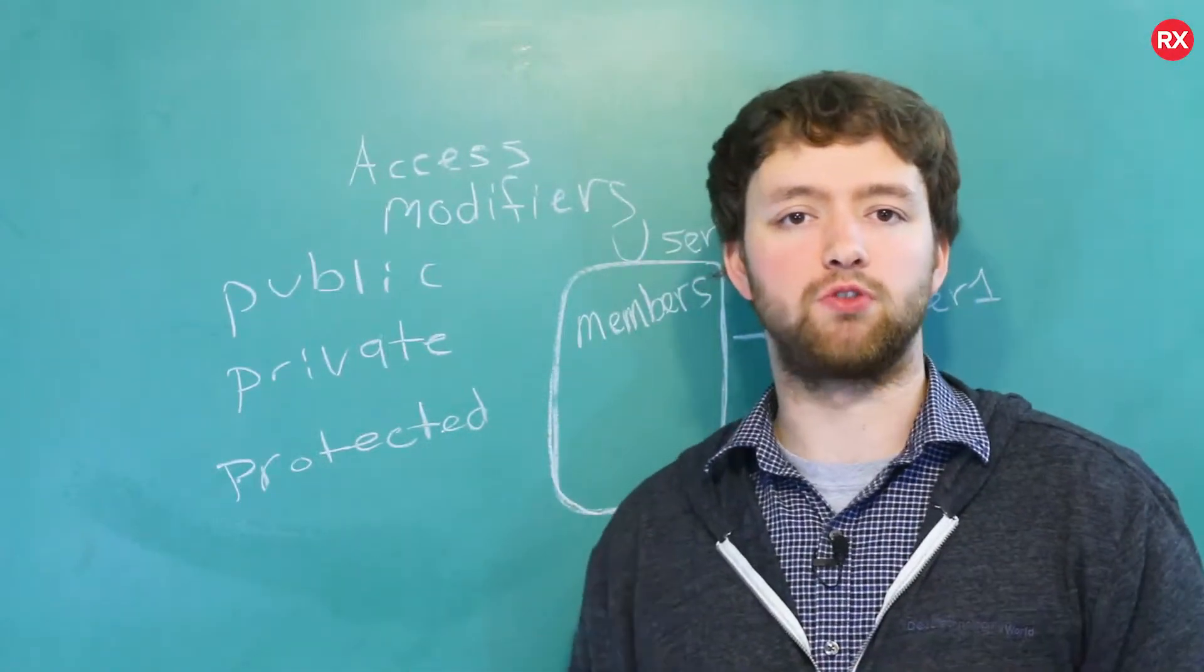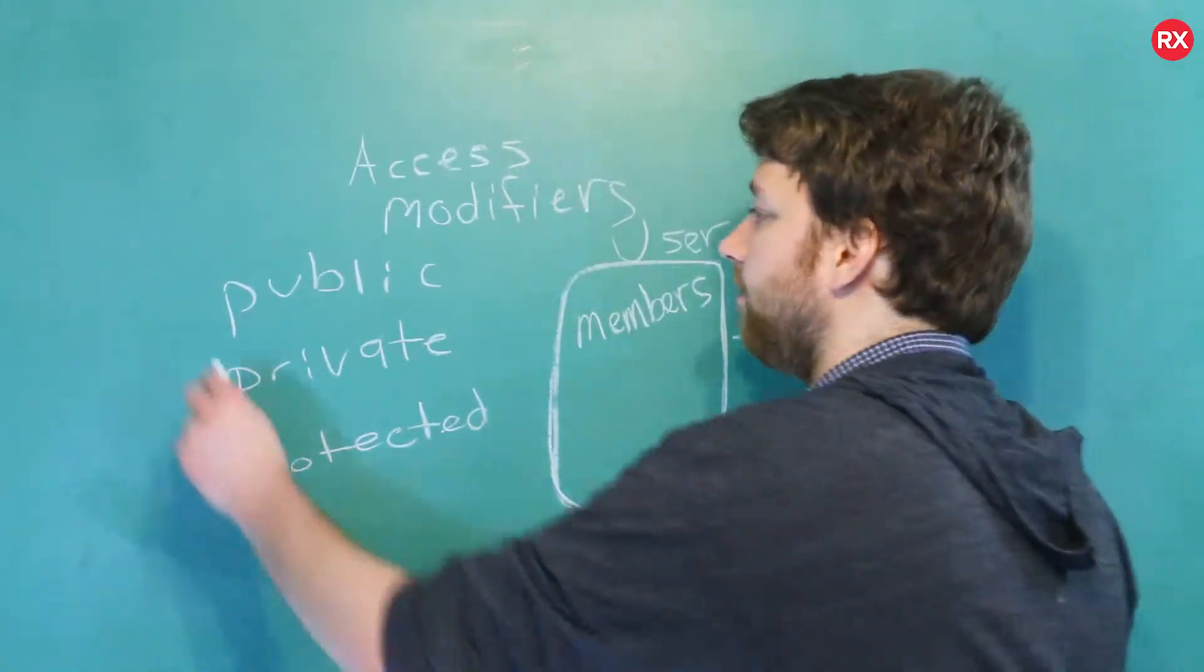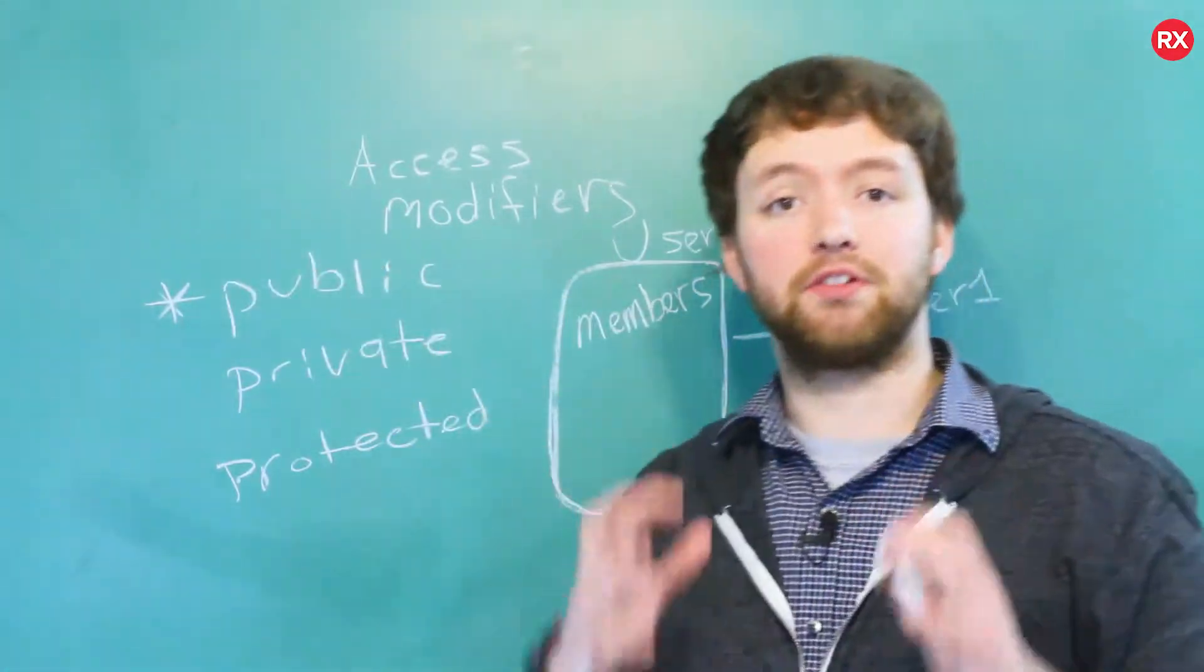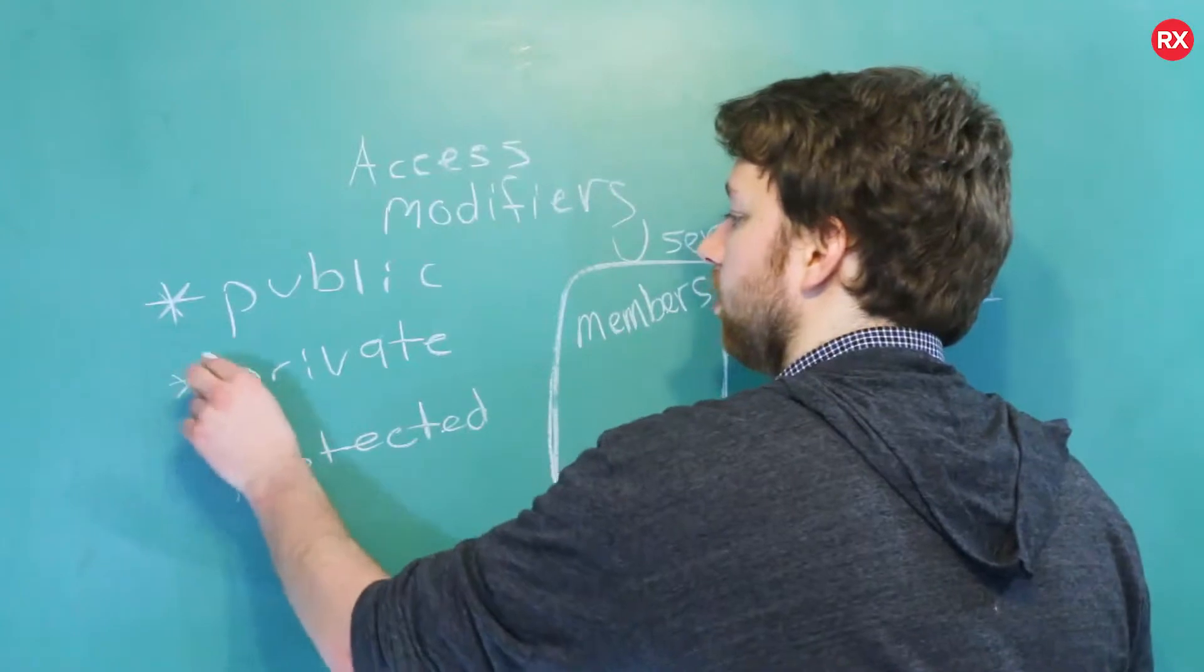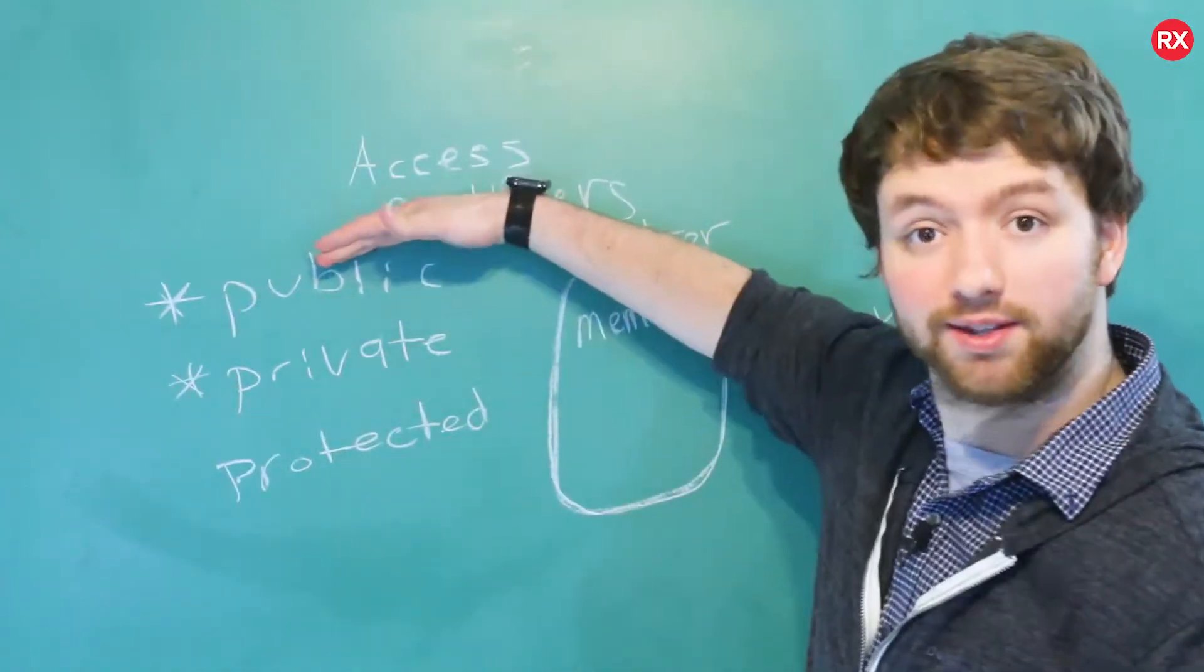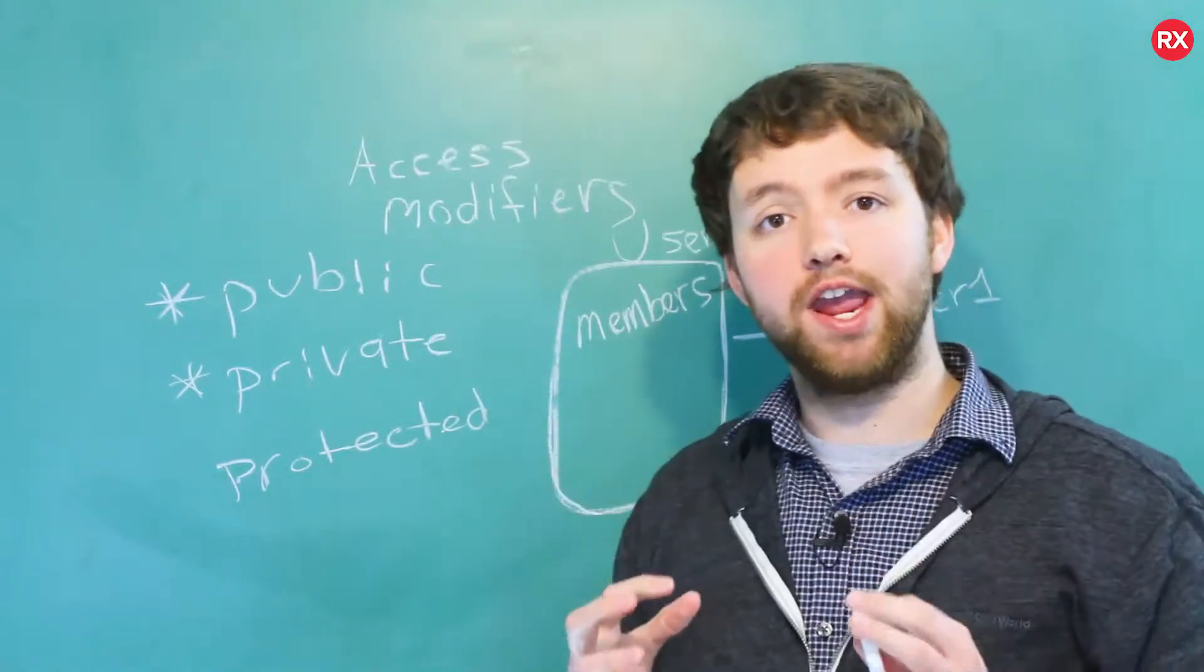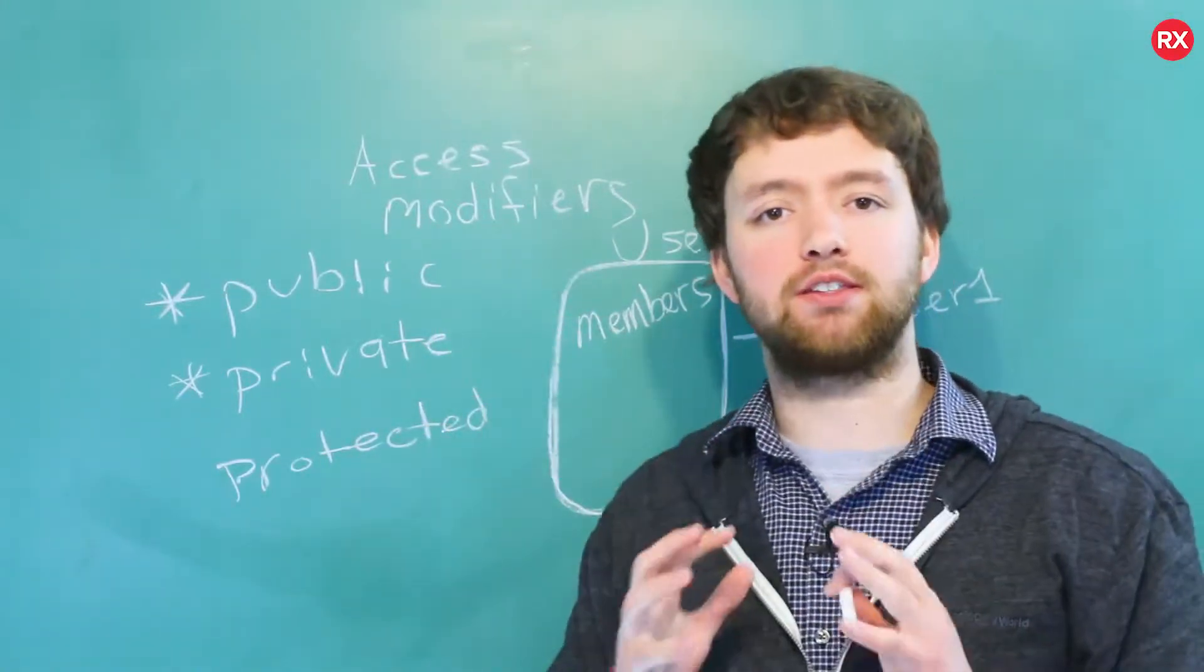Now the only difference when it comes to structs and classes is that structs, the members are by default public. So struct, with classes, they are by default private. Public struct, private class. Now you can change the access modifier for the members, but you have to specify that. So to do that, you would just say private and then put a colon.